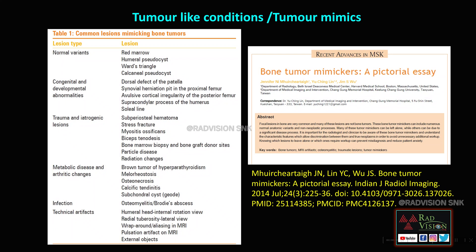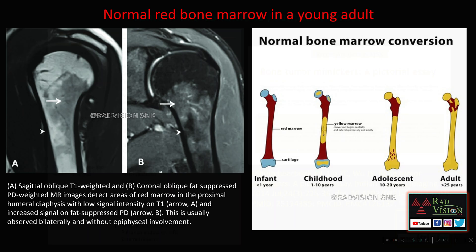Coming to tumor-like conditions or tumor mimics — this is the journal I have based this video on. You can pause the slide and see all the common lesions which can mimic bone tumors. These can be normal variants, congenital or developmental abnormalities, trauma or iatrogenic lesions, metabolic disease, arthritic changes, infection, and technical artifacts — all of which can mimic tumors.